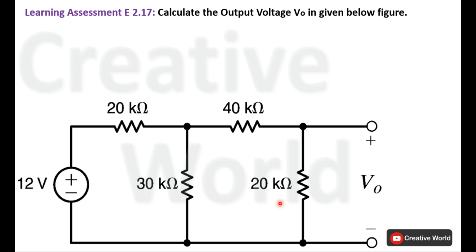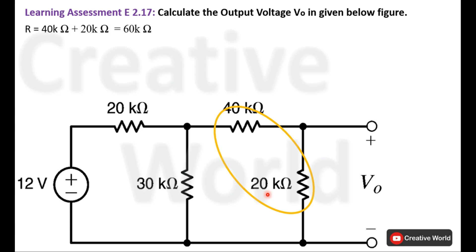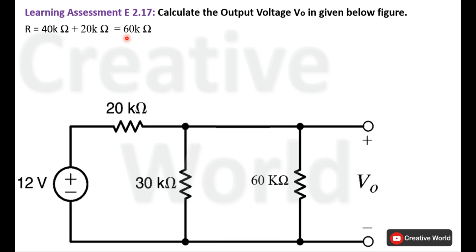Start reducing the circuit. The 40 kilo ohm and 20 kilo ohm resistances are connected in series, so we sum them together to form a single equivalent resistance of 60 kilo ohm. We can replace these two resistances with a single 60 kilo ohm resistance.